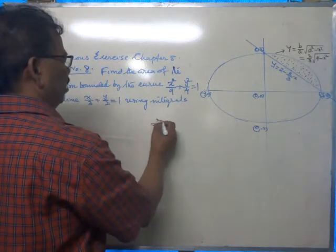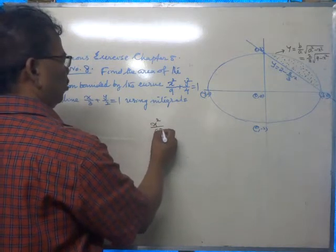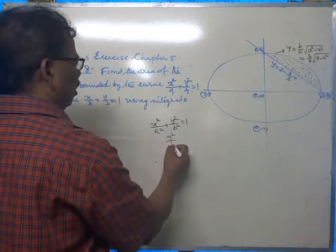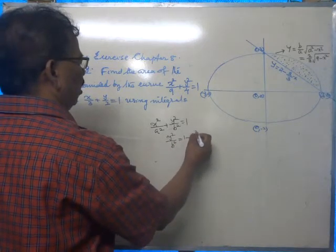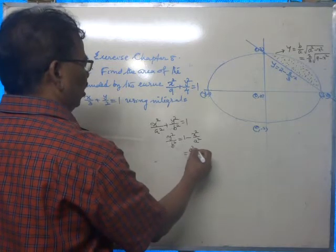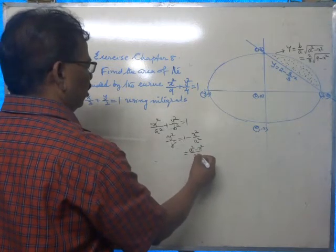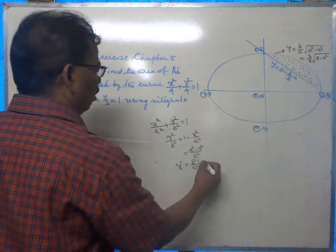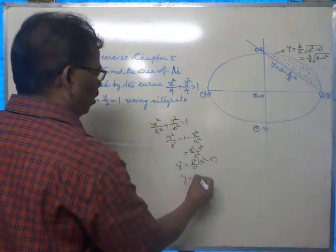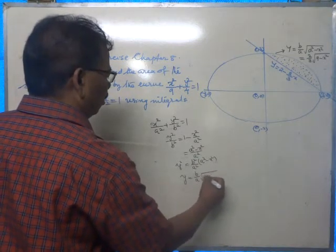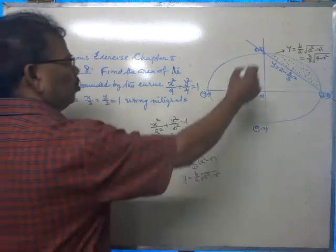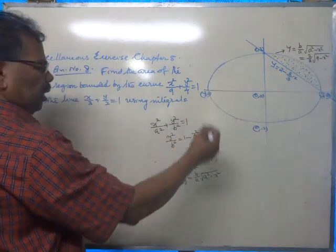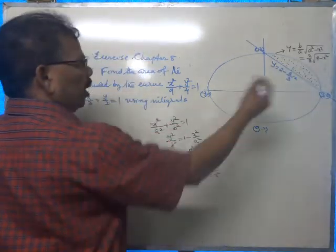The equation of the ellipse is x²/a² + y²/b² = 1, so y²/b² = 1 - x²/a² = (a² - x²)/a². Therefore y² = (b²/a²)(a² - x²), and y = (b/a)√(a² - x²). Here b = 2 and a = 3, so b/a = 2/3, giving y = (2/3)√(9 - x²).